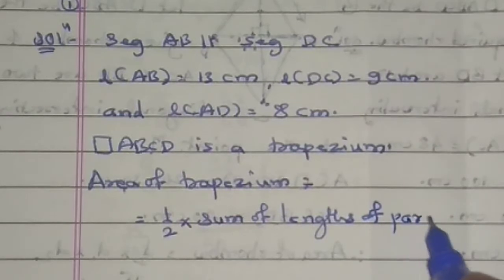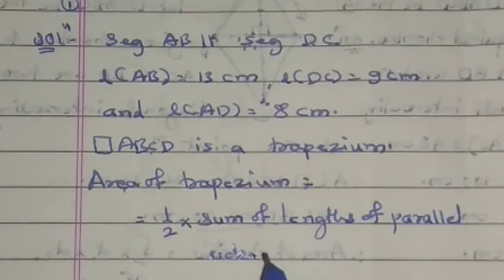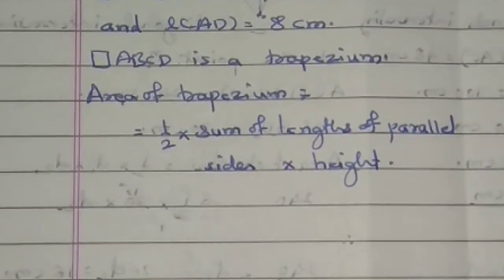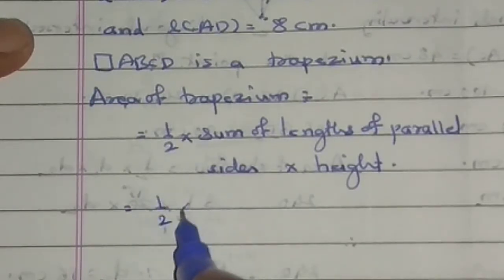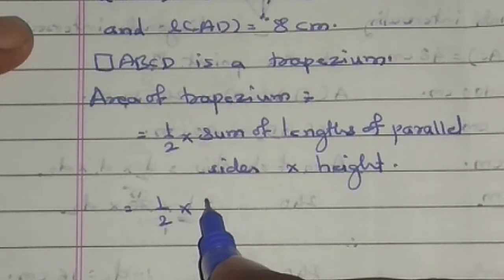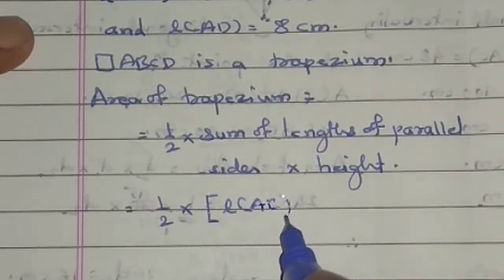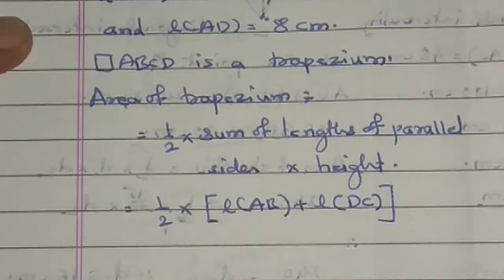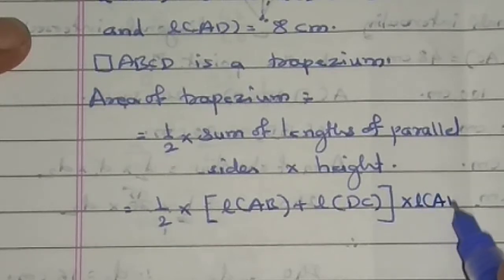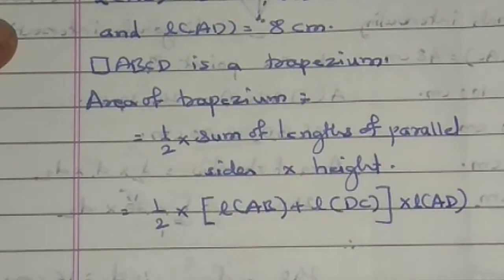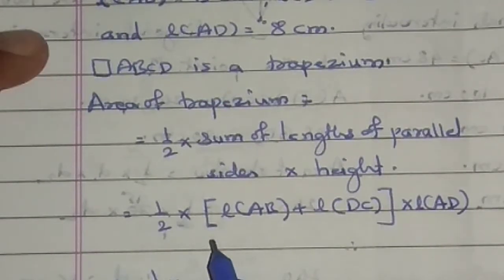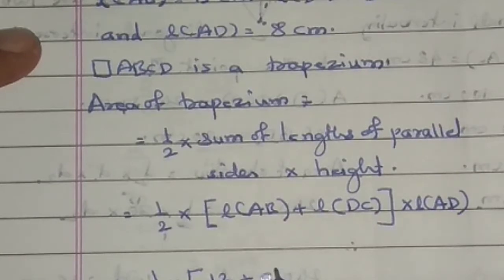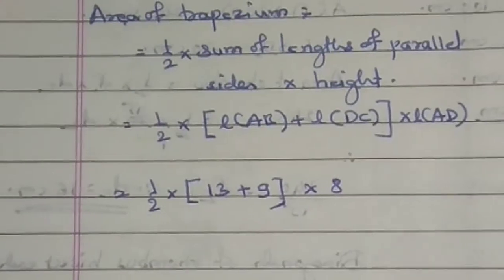Area of trapezium: first we identify that segment AB is parallel to segment DC. Given: length of AB equals 13 cm, length of DC equals 9 cm, and length of AD equals 8 cm. Quadrilateral ABCD is a trapezium. Area of trapezium equals one half times sum of lengths of parallel sides times height, which is one half times (length of AB plus length of DC) times height AD.